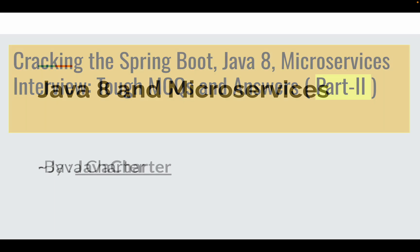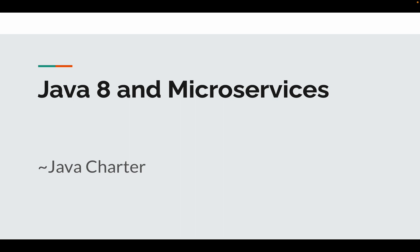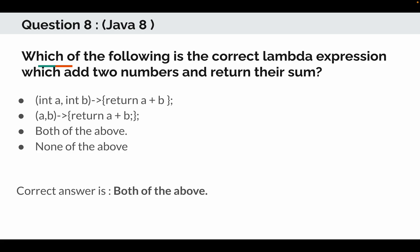As mentioned, these questions are mainly on Java 8 and microservices. Continuing from Part 1, question number 8 is a Java 8 question: which of the following is the correct lambda expression that adds two numbers and returns their sum? Options include: (A) integer a, integer b, lambda returns a plus b; (B) a, b lambda in curly brackets with return a plus b; (C) both of the above; (D) none of the above.